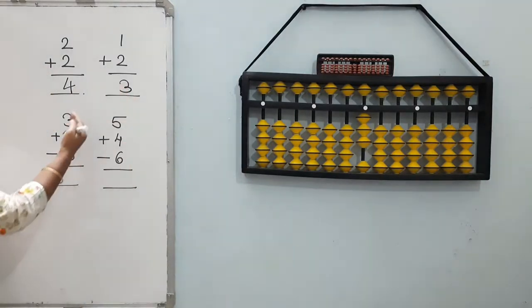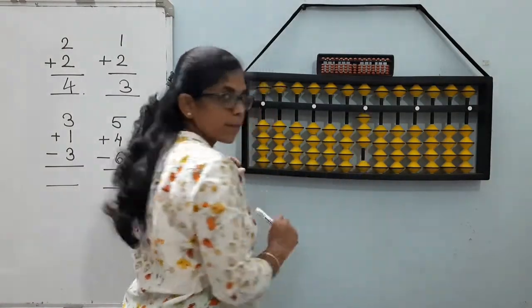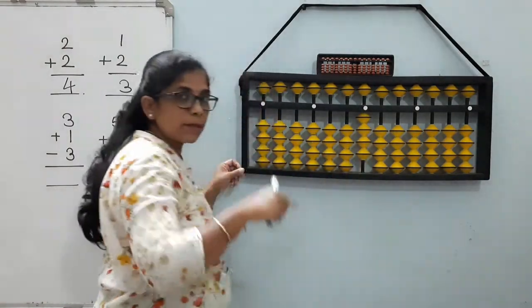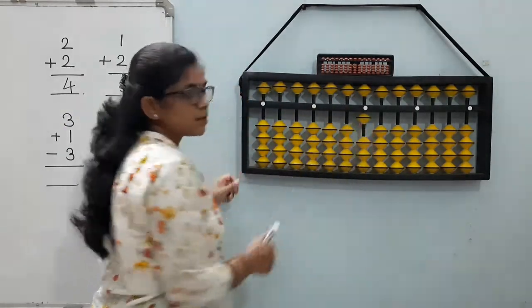The next sum is 3 plus 1 minus 3. We have to remove these 3 beads. Answer is 1.